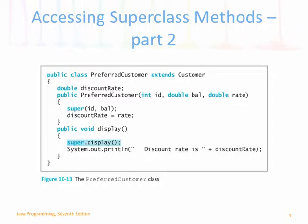Looking at the display method — public void display — the first thing we do is call super.display(), running the display method defined inside the superclass. Then we can add our extra output: discount rate and the discount rate value. Inside methods other than the constructor, the call to super.display() doesn't need to be the first thing that happens inside that method.